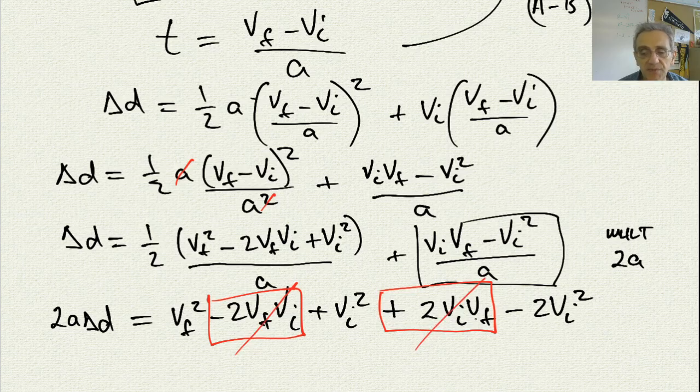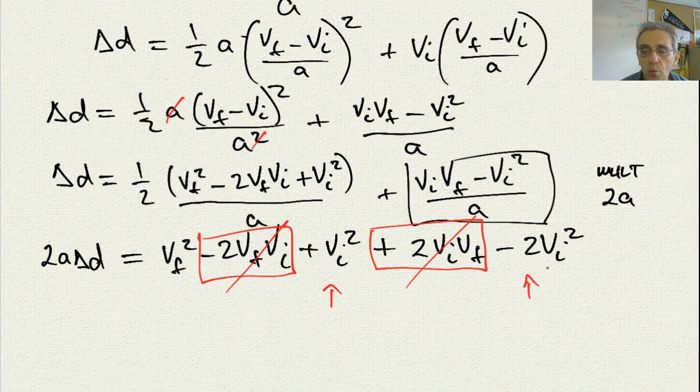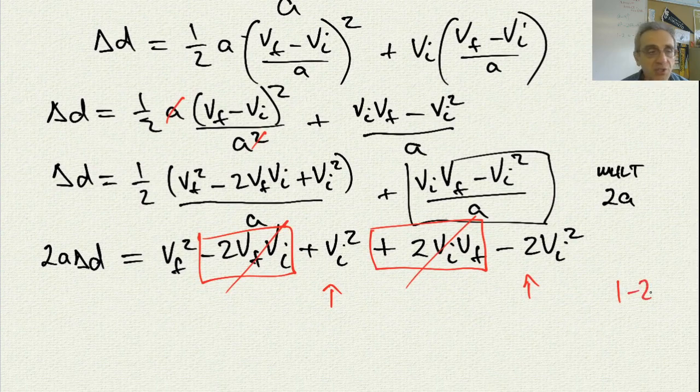This is a plus 2, this is a minus 2. So they cancel. The other thing which I notice is that my vi squareds, this one is plus 1, and this is negative 2. So 1 minus 2 is equal to negative 1.